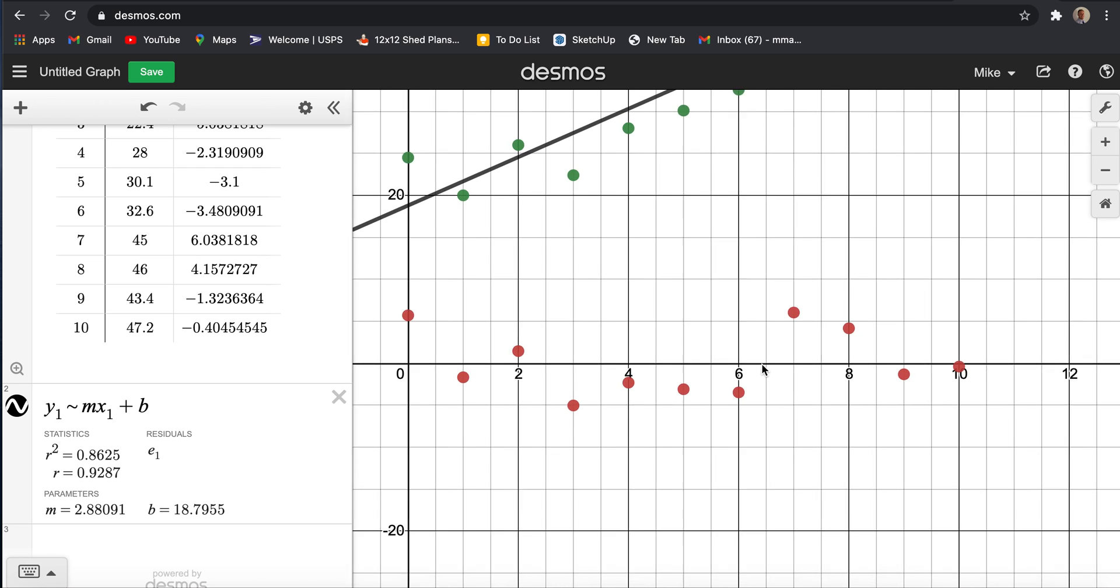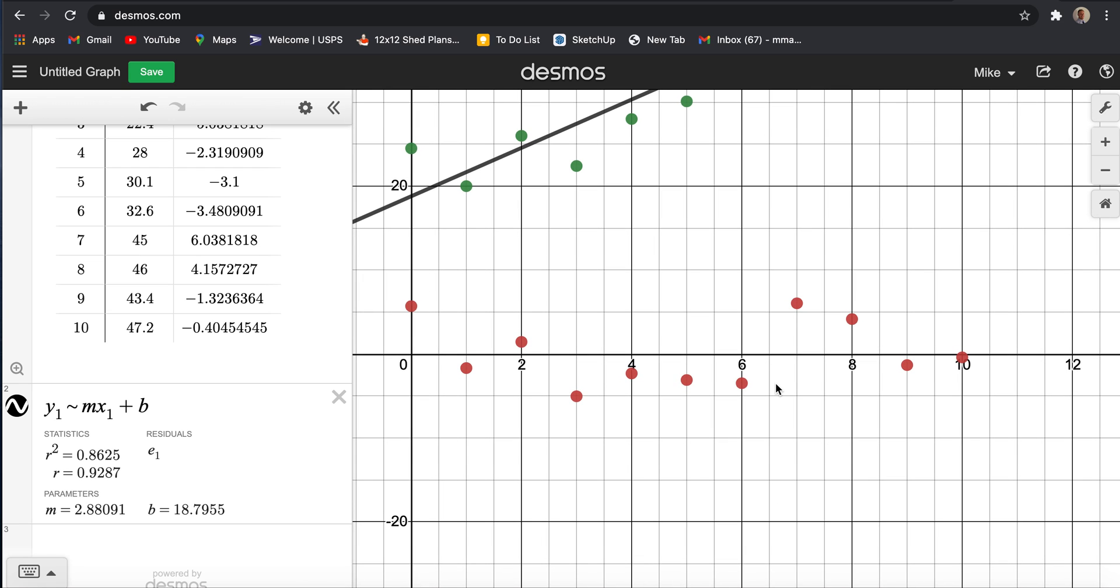And then all of these points are plotted along this. One way to tell if a line measures the data well is to look at a residual plot. And what you want to look for, something that shows that the data is represented well, is an even amount of points above and below the line. And you want the points to be closely clustered around the x-axis. And in our case, they're pretty close to the x-axis.